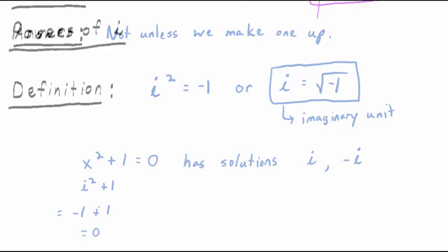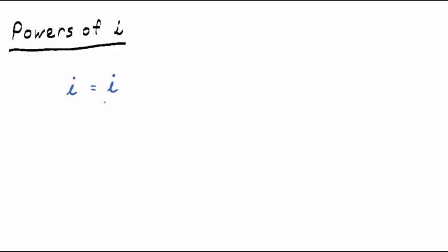We made up a solution. I is not like any number you've ever seen before — it only has four unique powers. I to the first power is I. I squared, as we've defined, is negative 1. What about I cubed? By the laws of exponents, I cubed means I squared times I. But I squared is negative 1, so negative 1 times I is negative I. So I cubed equals negative I. That doesn't happen when you cube 2 — 2 cubed is 8, not negative 2. This is a weird number.